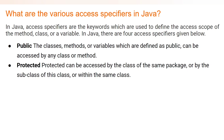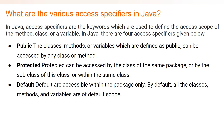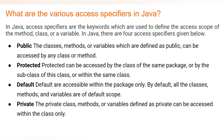After that, protected — protected can be accessed by the class of the same package or by the subclasses of that particular package or within other packages. Another one is default — default is accessible within the package only. By default, all classes, methods, and variables are of default scope if you don't provide any access specifier. The last specifier is private — if you declare a class, method, or variable as private, it can be accessed within the class only.